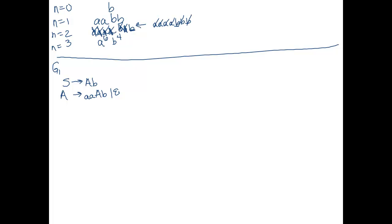The other grammar is the second method, where we're going to start from the outside in and then eventually make the final b. Let's call this G2. So S goes to aaSb or b. This grammar makes pairs of a's with a b, and at the end the last replacement is to replace S with b, making our final b. So those are two different grammars to do the same thing. Let's start with grammar two and convert it to Chomsky normal form.